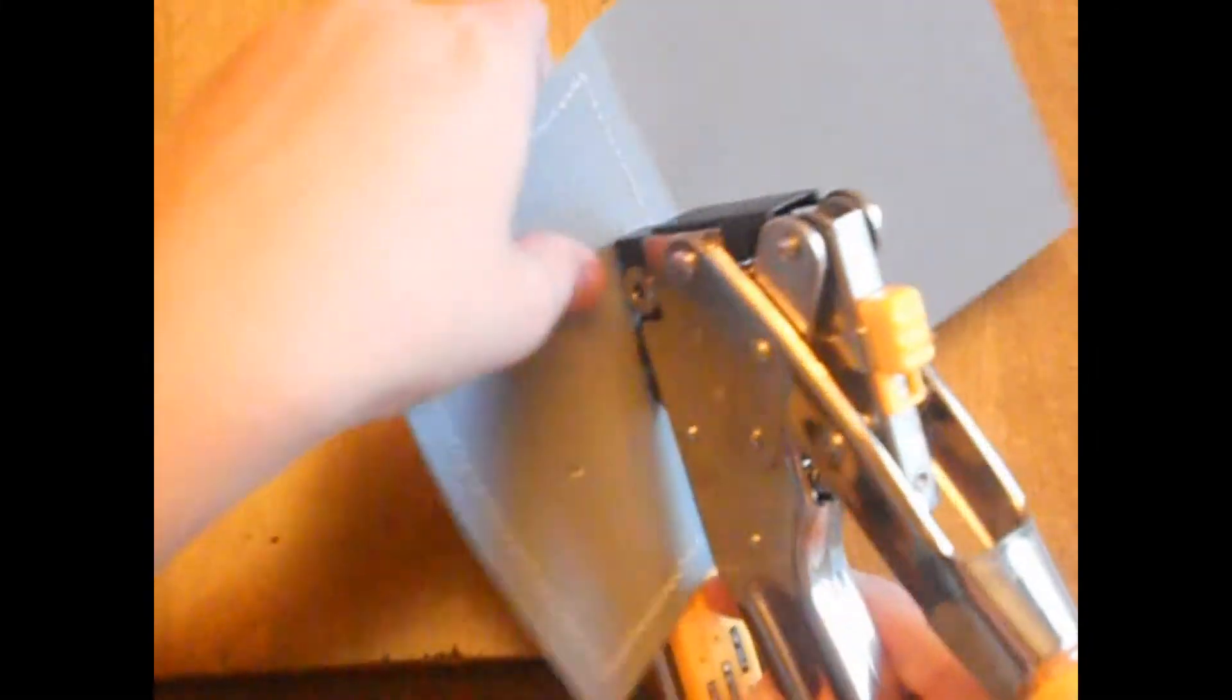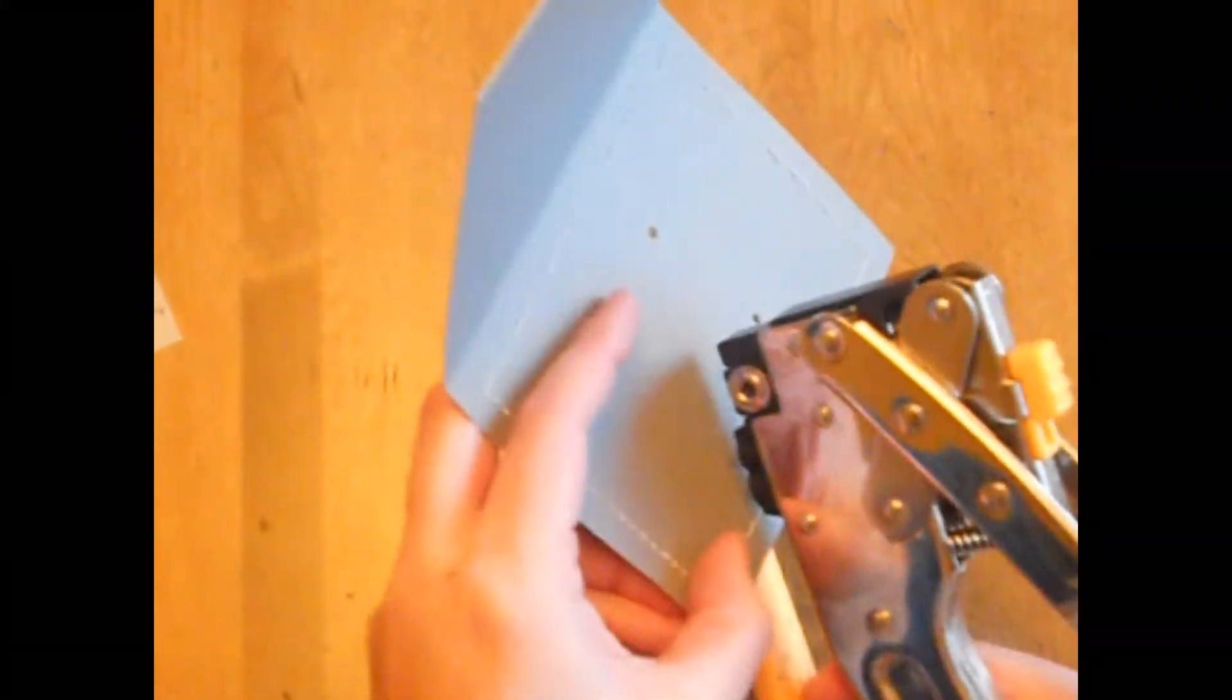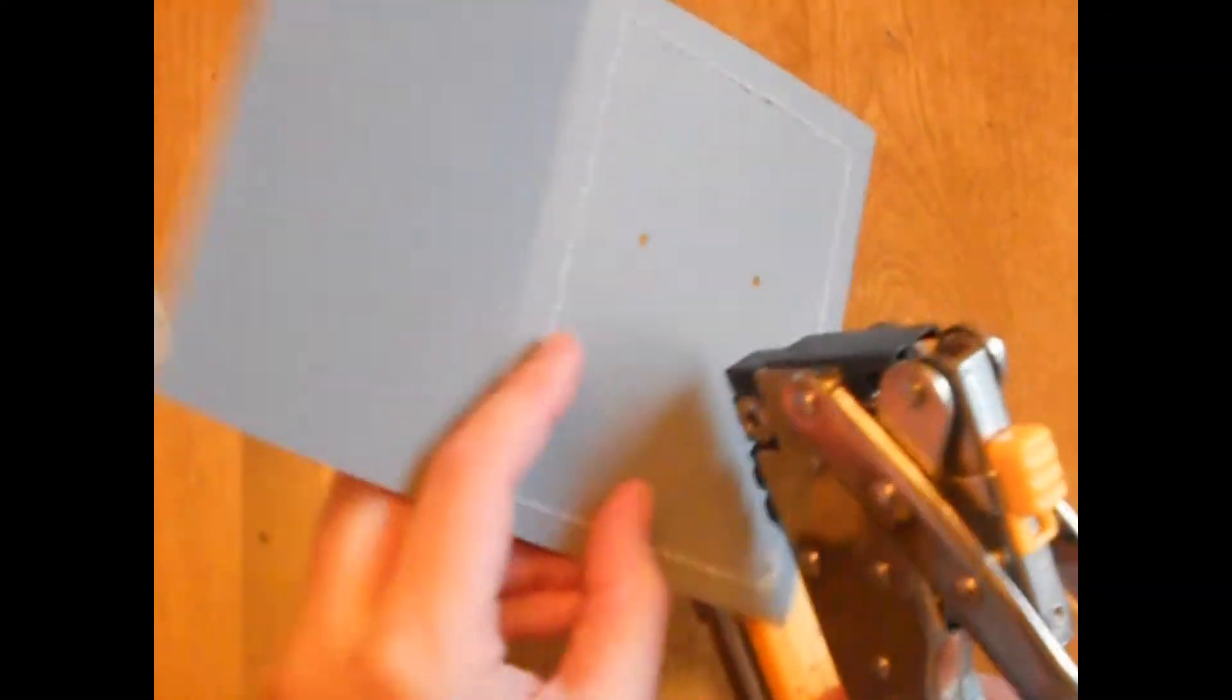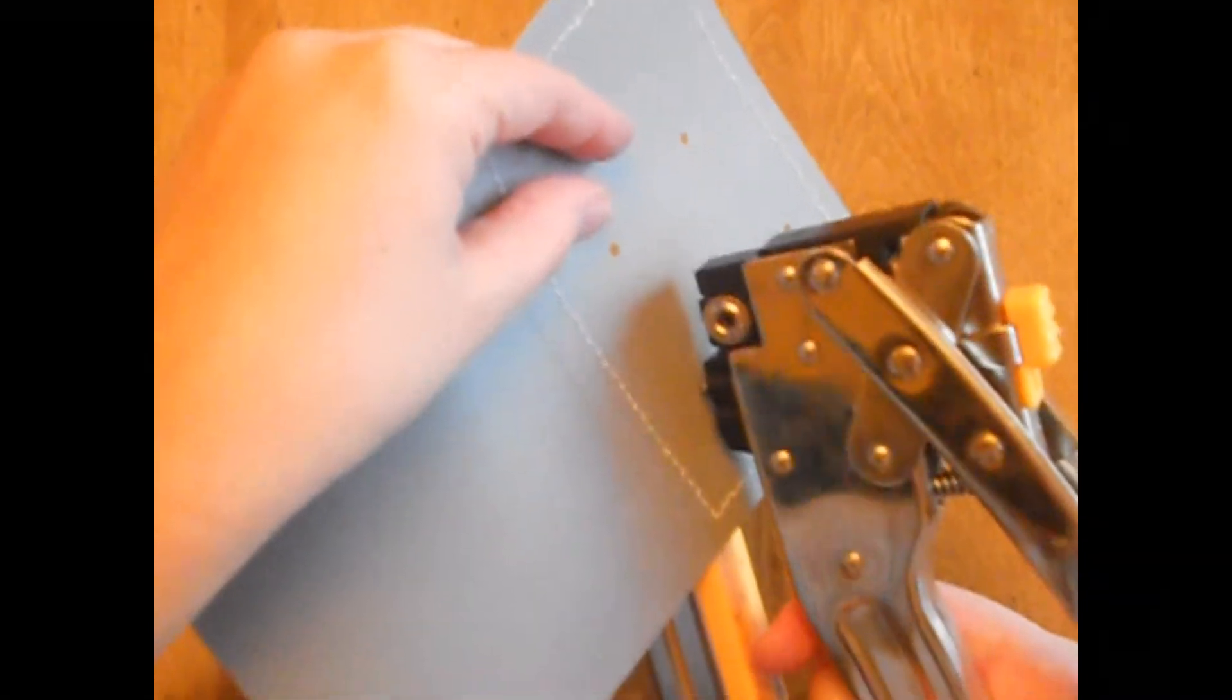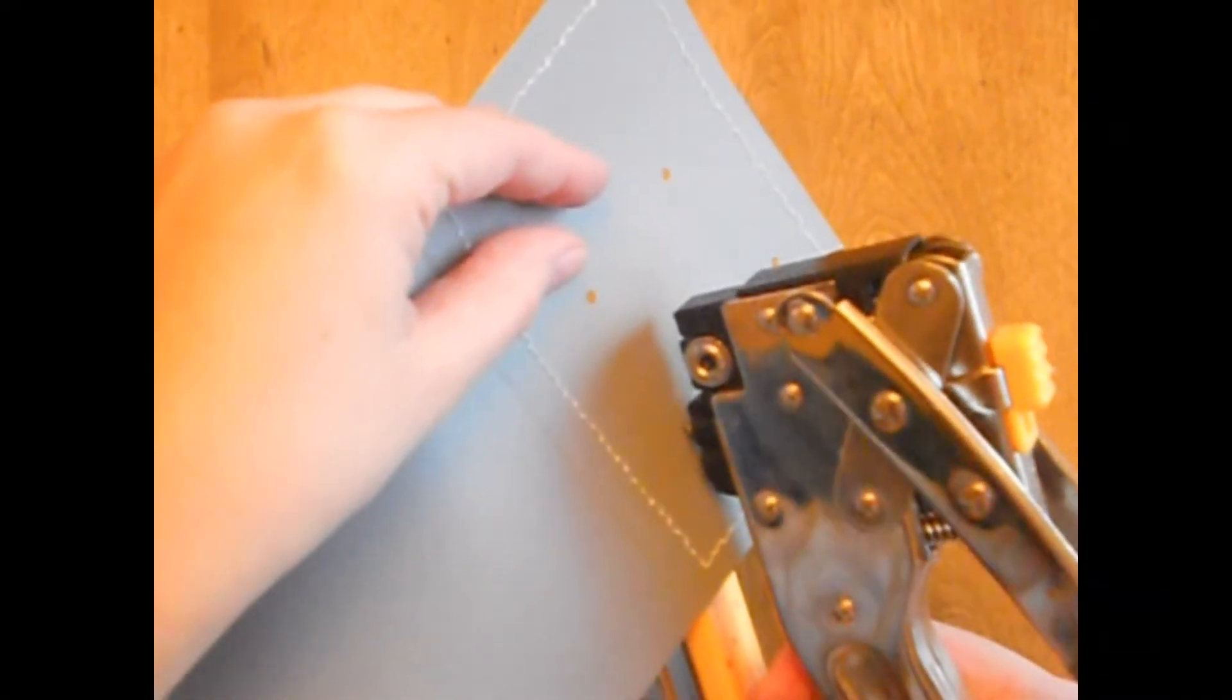And I'm just turning this to the side so you can see it. And now you can see that I have five holes and that's going to be my star.